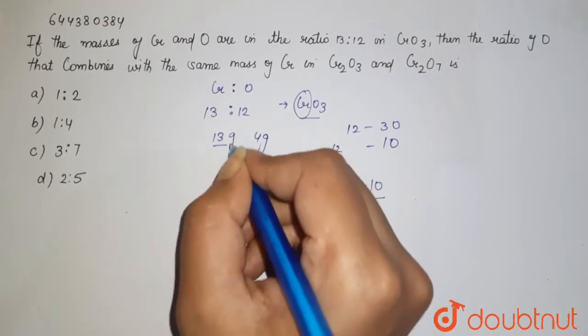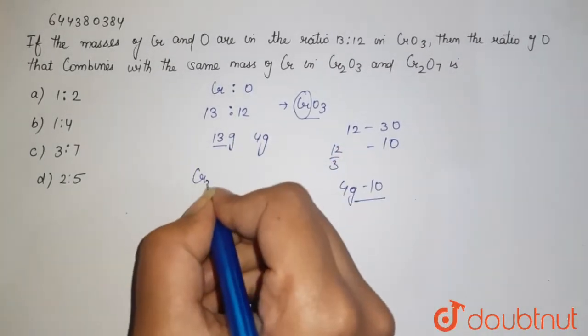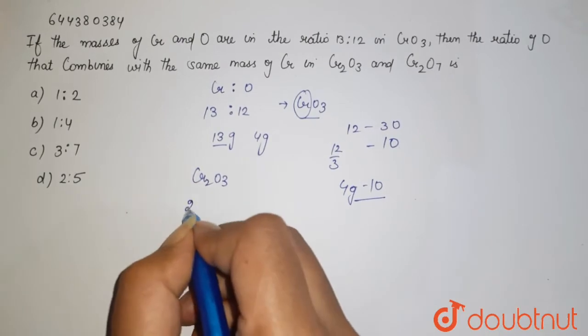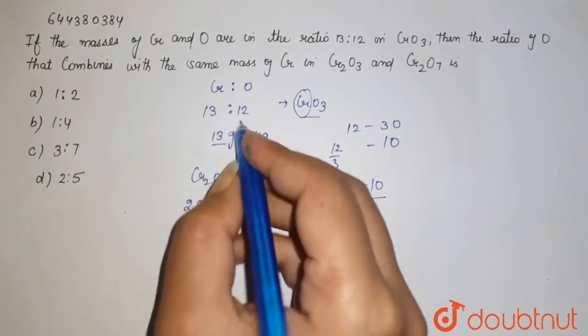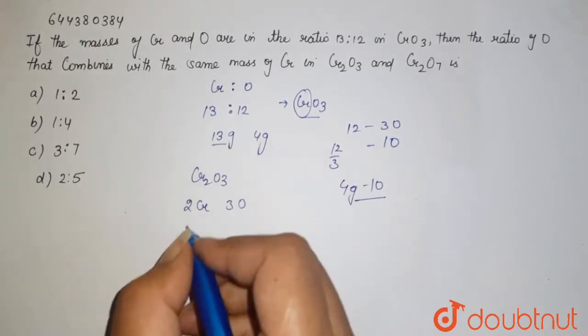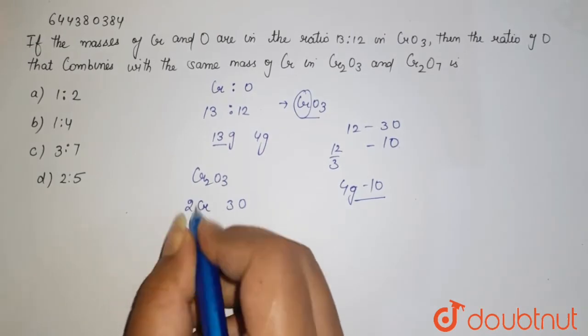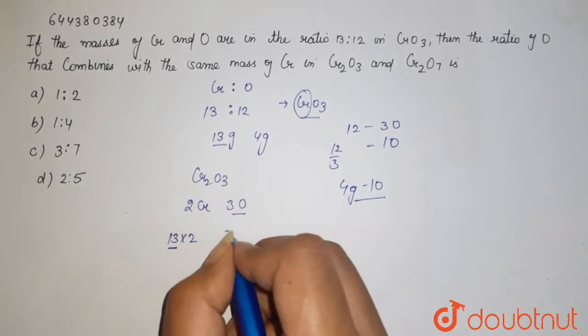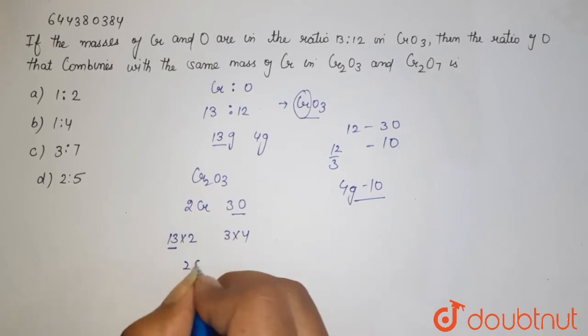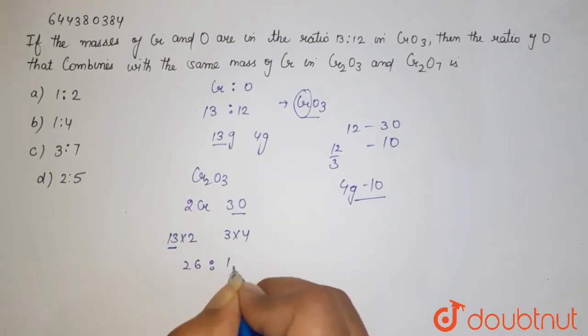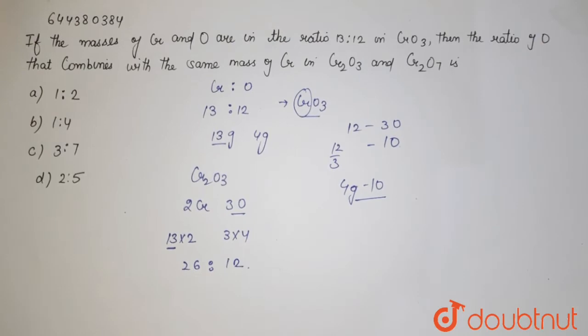If I talk about Cr2O3, here we are having two chromium and three oxygen. And here, according to the given situation, it is two chromium, one is 13, and three oxygen, one is 4. So it is 26, here it is 12. So this is the ratio of the mass.